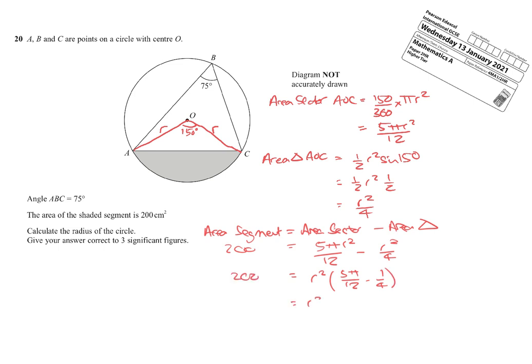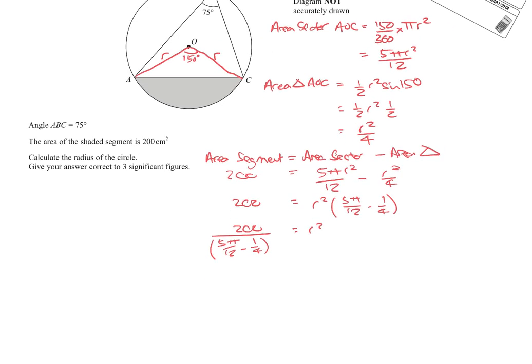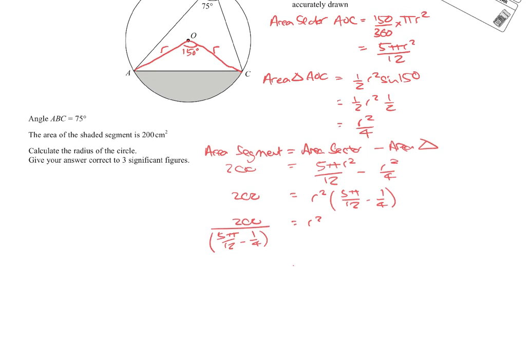So my radius squared is equal to 200 divided by this horrible thing here, 5π over 12 minus 1 over 4. So let's just tidy up the left-hand side on my calculator, see what answer I get.